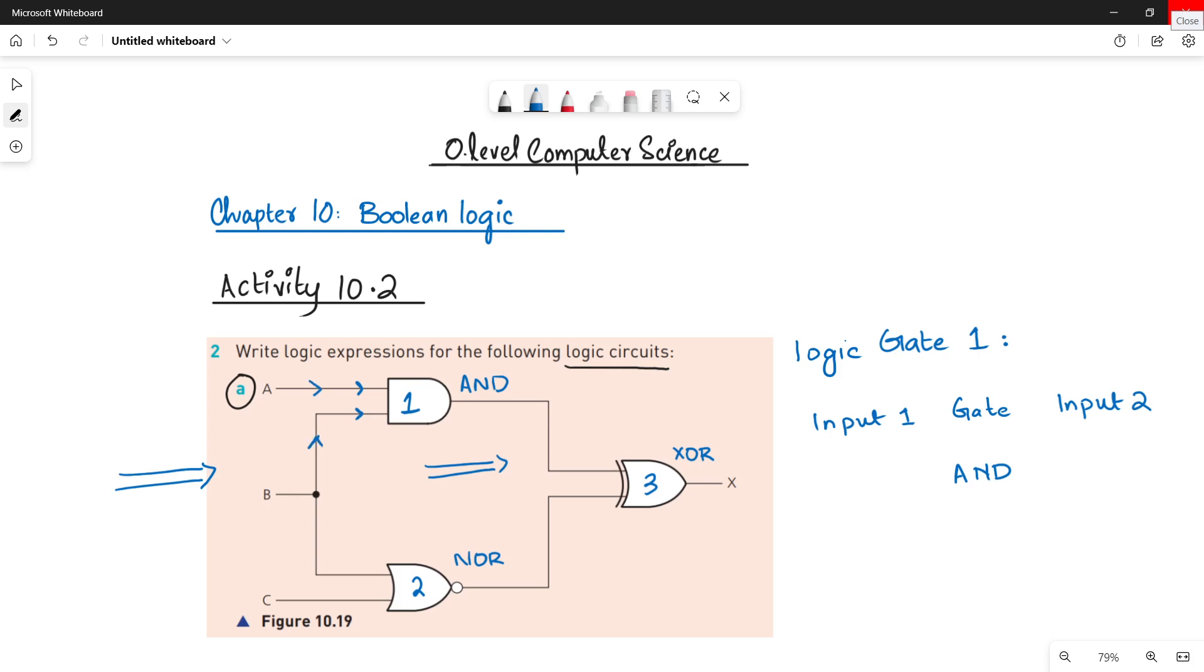So input A is A and input 2 is B. So this is the logic expression for AND gate or logic gate 1: A AND B.